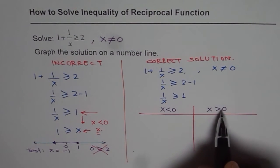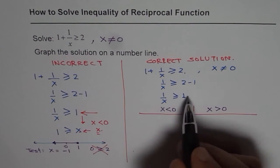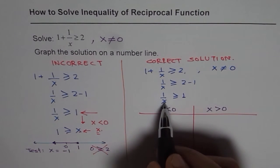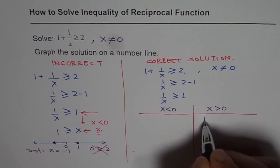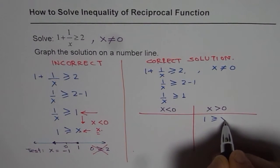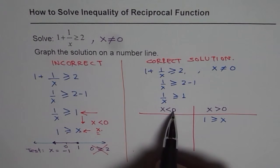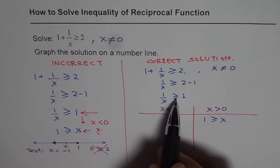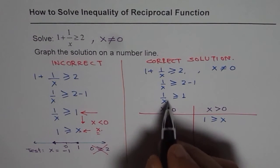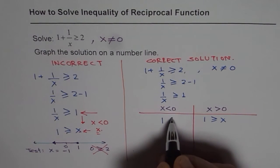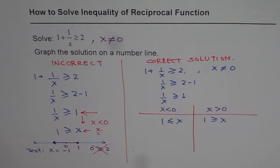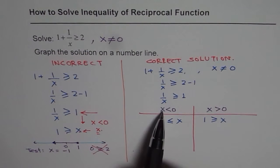If x is greater than 0 in that case we can cross multiply this and write 1 is greater than equals to x. That is fine. But if x is less than 0 that means x is negative. We have to change the sign. So it becomes what? It becomes 1 less than equals to x. Do you understand? So the sign has to change if x is negative number. That is a critical issue.